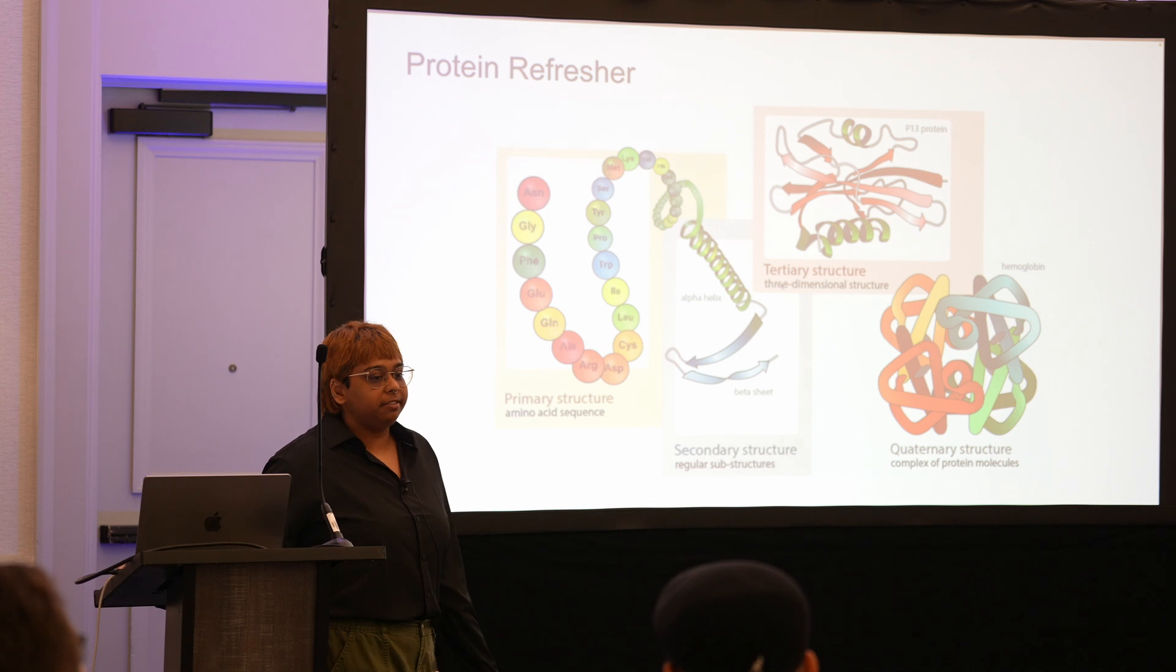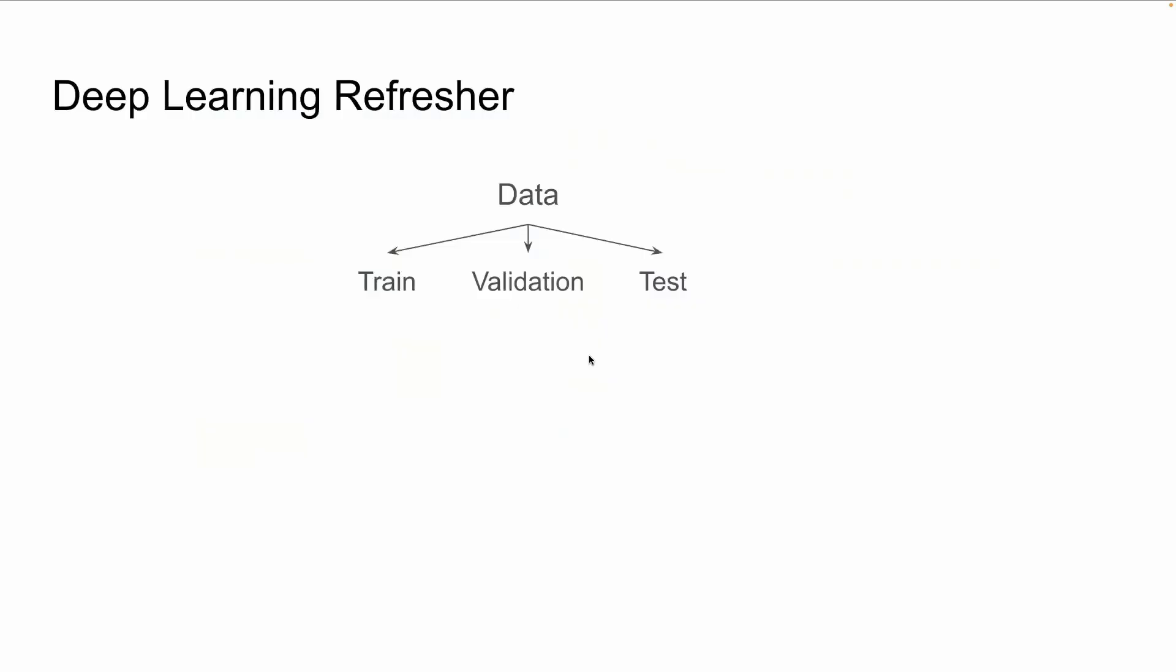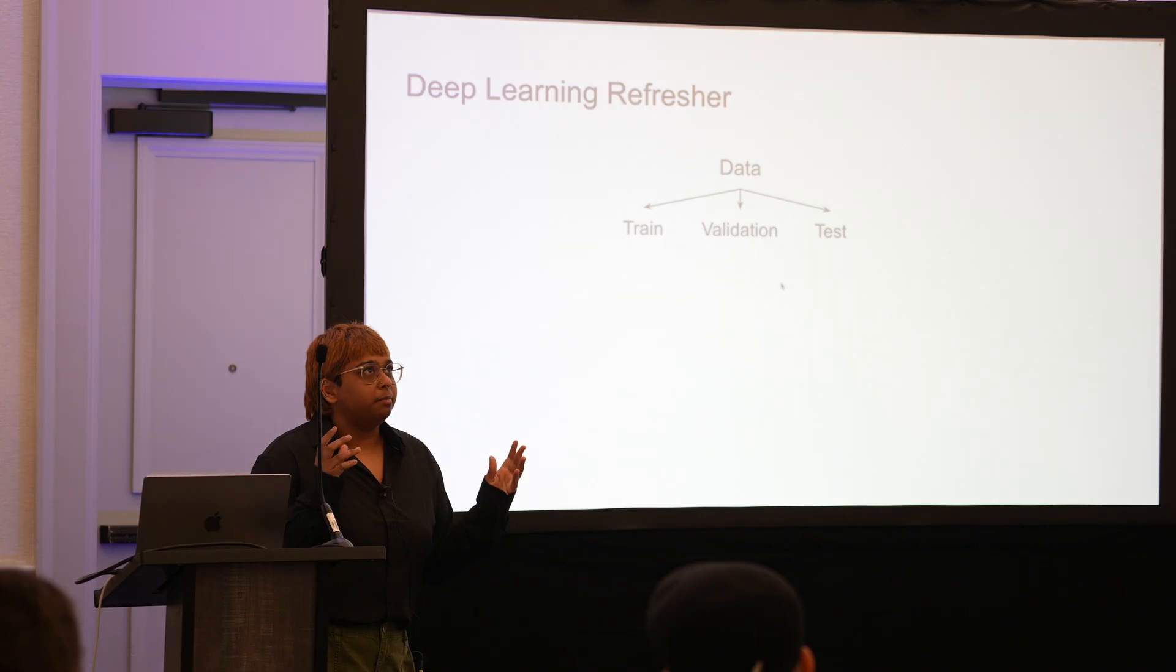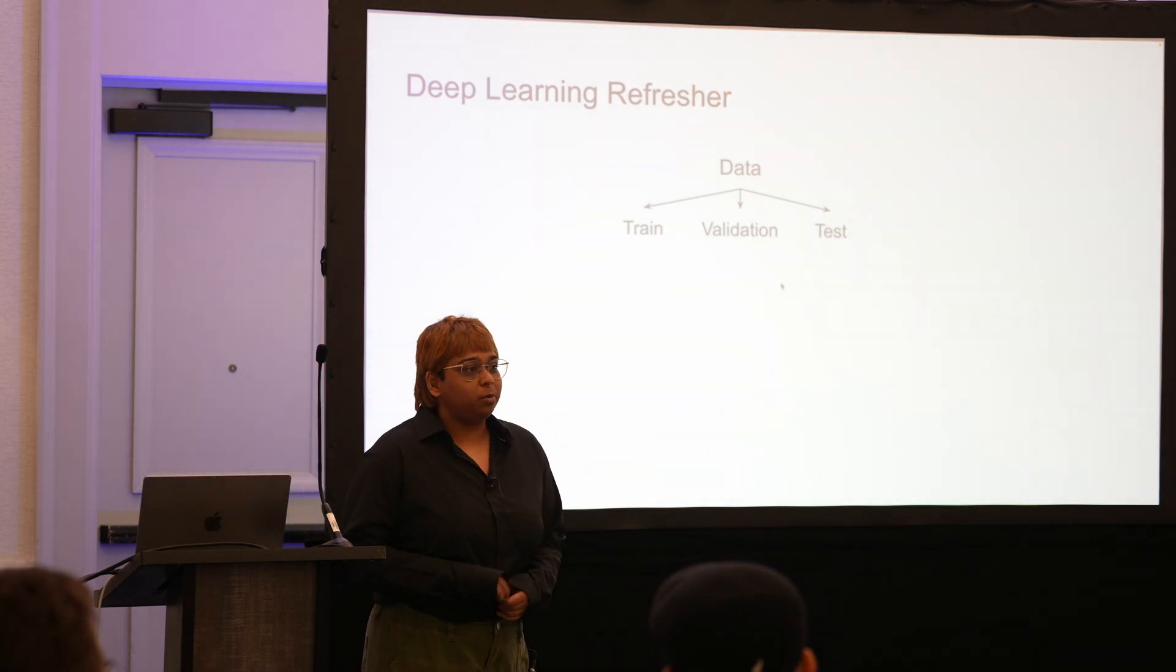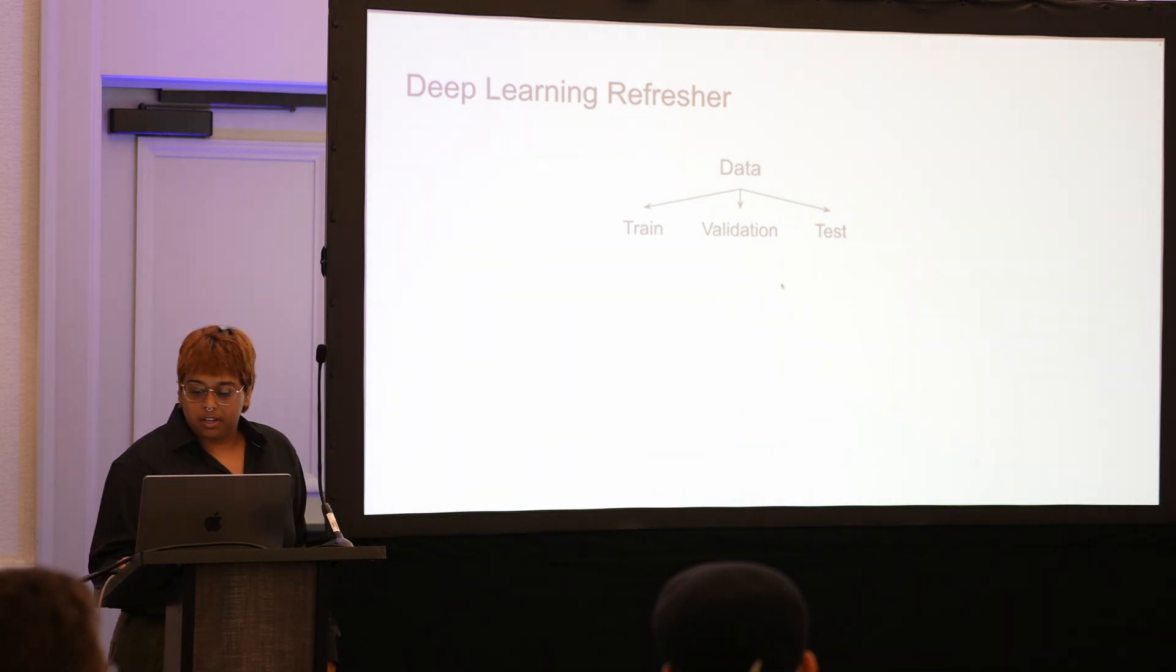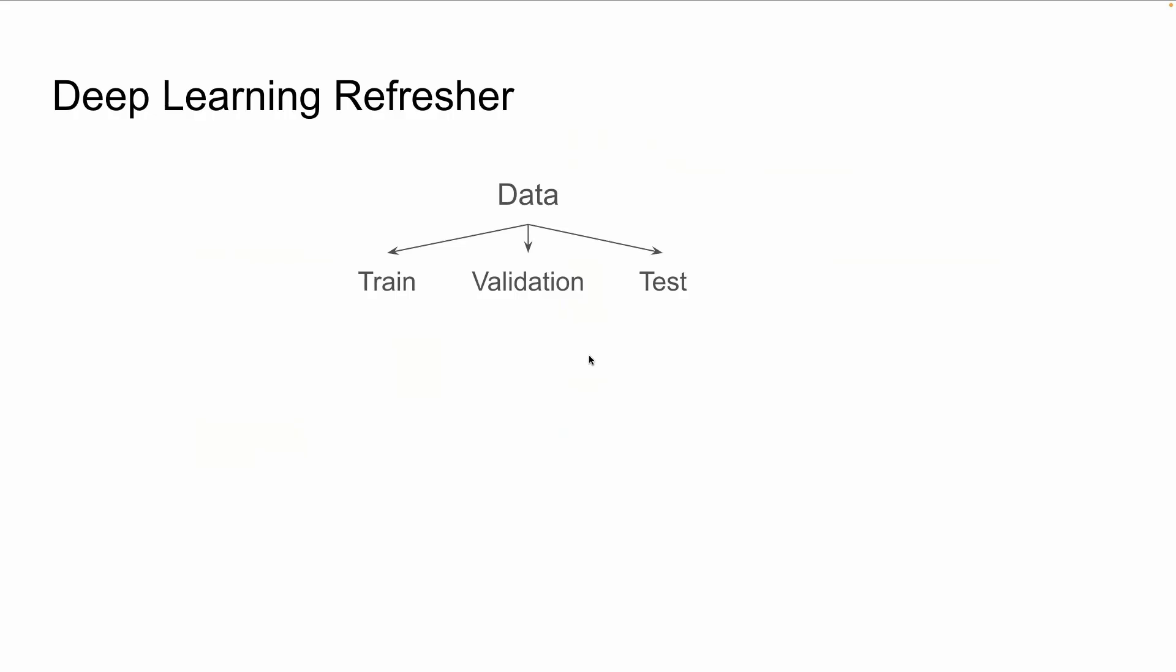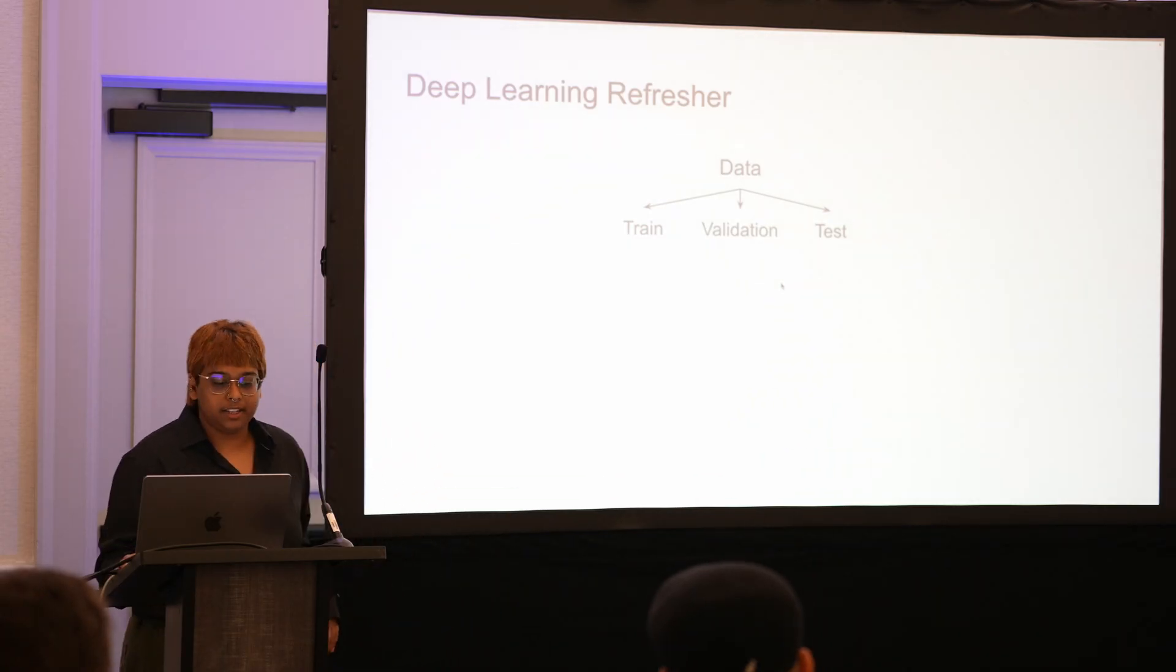I also want to give a deep learning refresher for those who may not be as familiar. With deep learning, the main workhorse is data. It's important to talk about how we split the data and how models are trained. Usually, people take their data and split it into three sets: training, validation, and test. You can do 80-10-10 for these. There are other options, but I think that's the most common one.